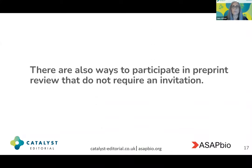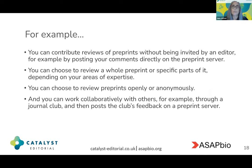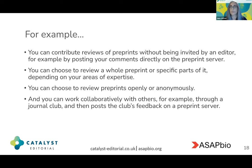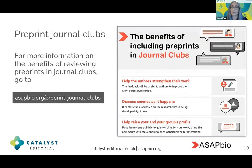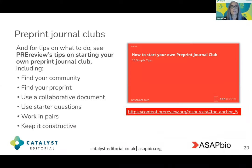There are also ways to participate in preprint review that don't require an invitation from a journal editor. You can contribute reviews of preprints directly by posting your comments on a preprint server alongside the preprint you've assessed. You can choose to review a whole preprint or specific parts of it, depending on your areas of expertise. You can review preprints openly by putting your name on your reviewer comments, or anonymously using a pseudonym. You can work alone or collaboratively — for example, through a journal club where you assess a preprint together and post the club's feedback on a preprint server. PREreview has also put together a video on how to start your own preprint journal club, accessible via a link on this slide.